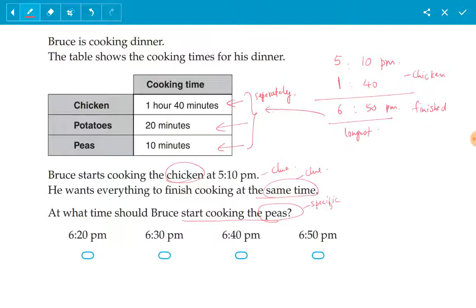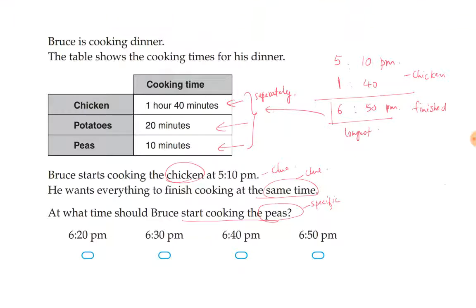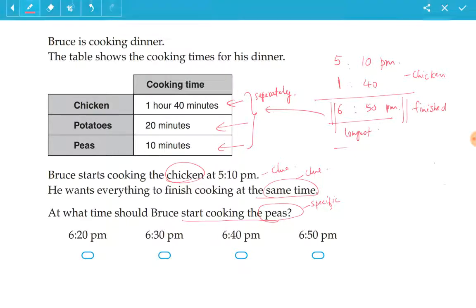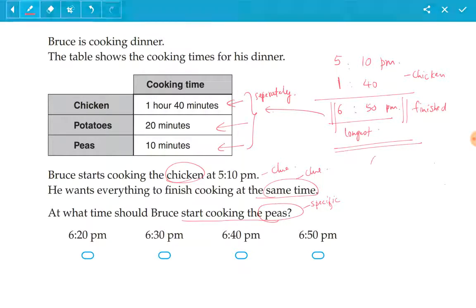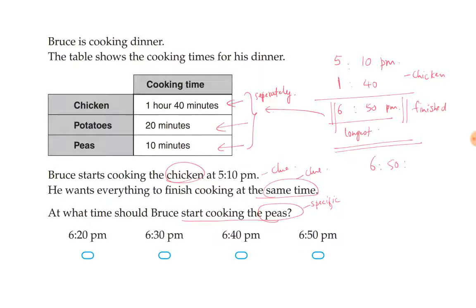Peas and potatoes and chicken all need to finish at the same time. In this case we can safely say that they all should finish at 6:50 PM.